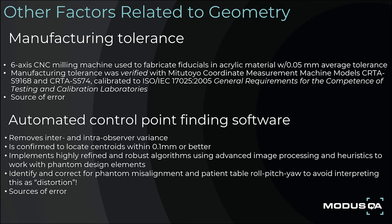Other sources of error related to geometry include manufacturing tolerances. MODIS QA uses a six-axis CNC milling machine to fabricate fiducials in acrylic material with 0.05 mm average tolerance. This manufacturing tolerance was verified through the use of a coordinate measurement machine calibrated to current ISO standards. Automated software removes inter- and intra-observer variance. Our software is confirmed to locate centroids within 0.1 mm or better, implementing highly refined and robust algorithms using advanced image processing and heuristics. The software also identifies and corrects for phantom misalignment and patient table roll, pitch, and yaw to avoid interpreting these as distortion.